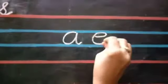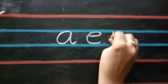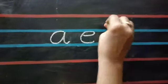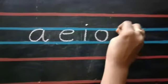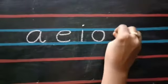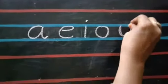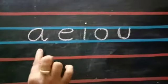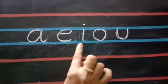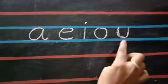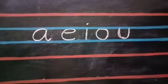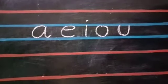Children, look at the board. A, E, I, O, U. A, E, I, O, U are vowels, children.